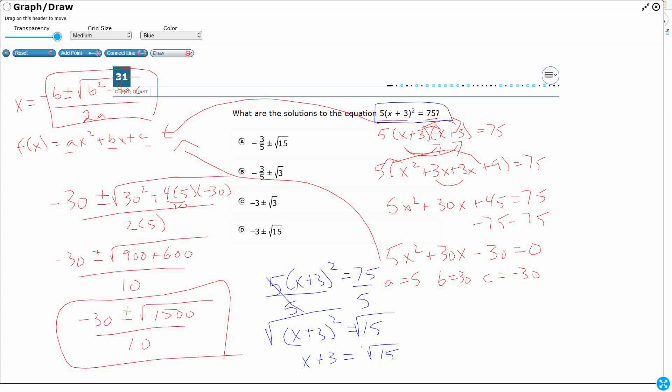And that's going to end up being that plus or minus. And then I just need to take that 3 out. So x equals negative 3 plus or minus the square root of 15. And that is going to be our answer, D.